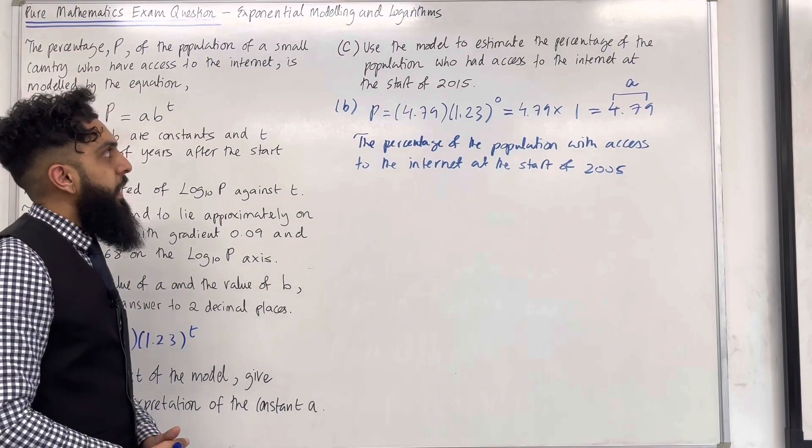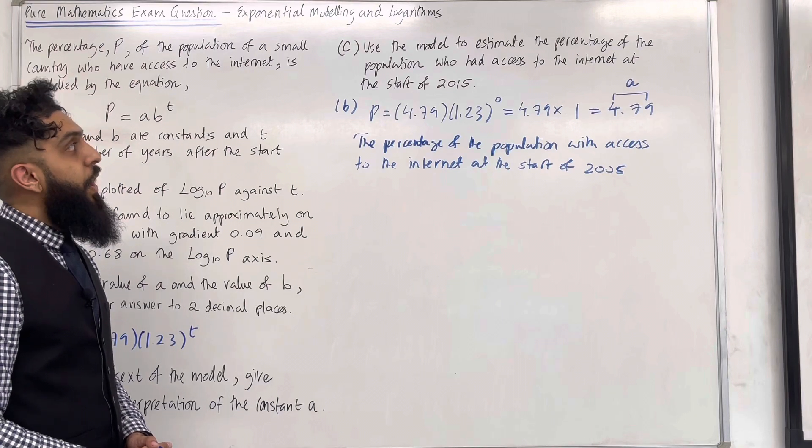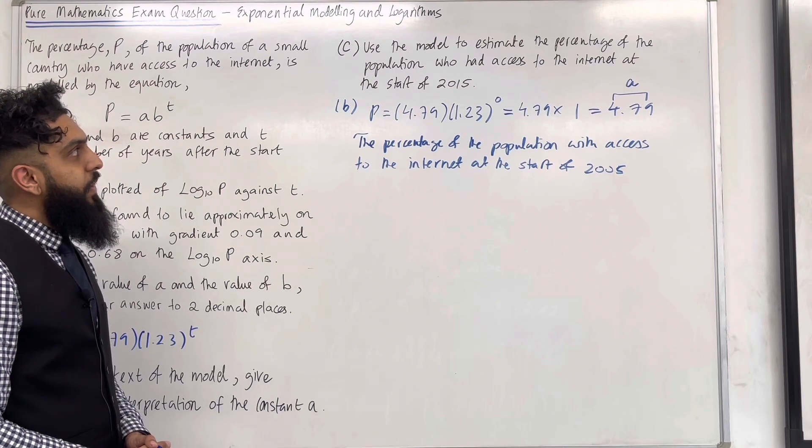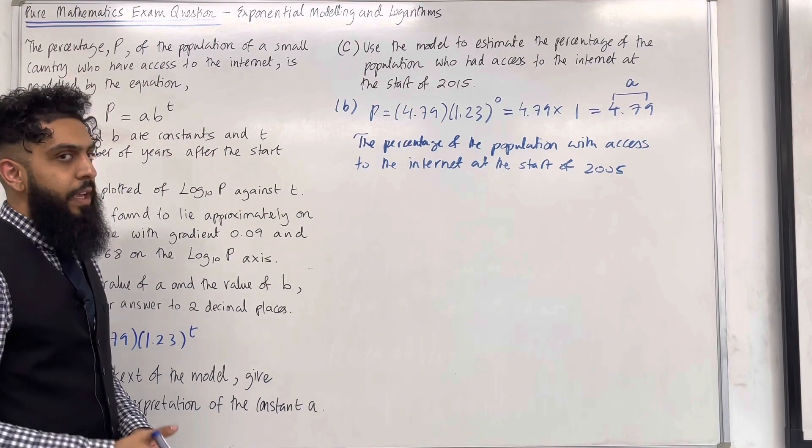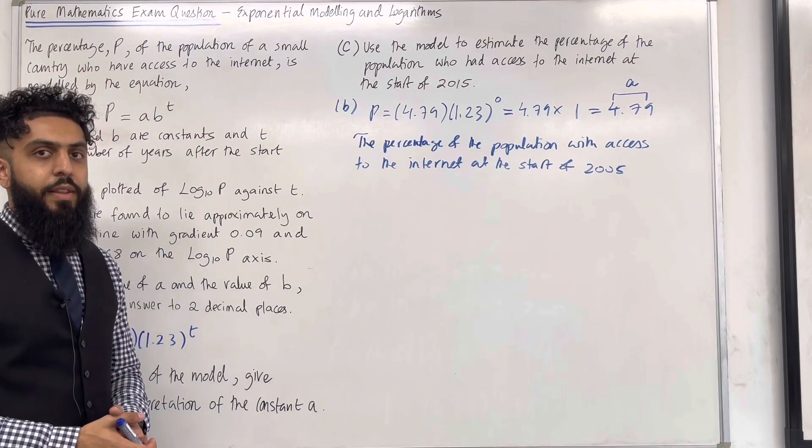Let's have a look at part C. Use the model to estimate the percentage of the population who had access to the internet at the start of 2050. Please pause the video, have a go at part C, once you've got your complete solution, then play the video.